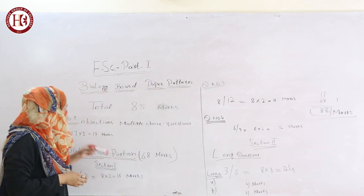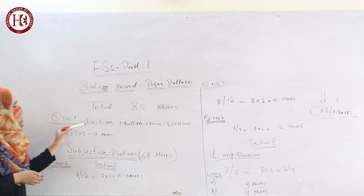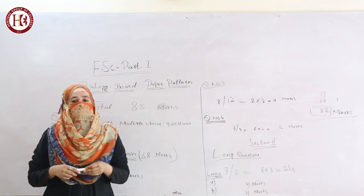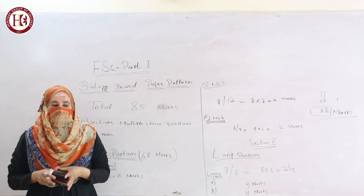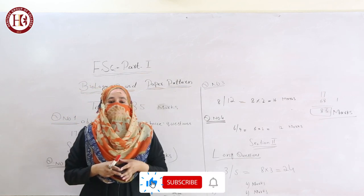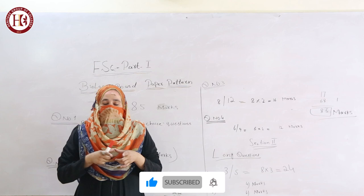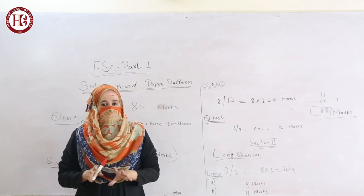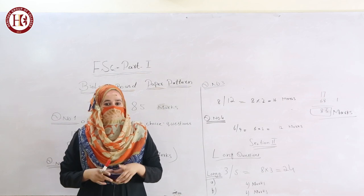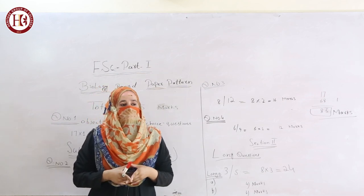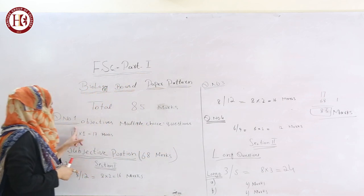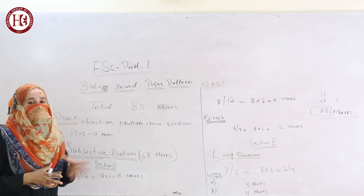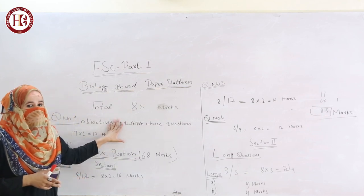First, Question No. 1. In Question No. 1, you are given Objective Multiple Choice Questions. It consists of 17 marks. Every Multiple Choice Question has 4 options. Out of these four options, you have to circle any one appropriate answer. This is your Objective Portion.